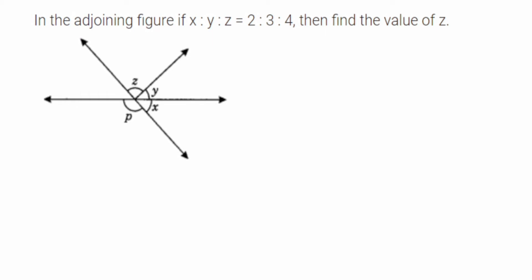How to solve this? They have given angles in the ratio 2:3:4. Whenever angles are given in a ratio, we consider a variable and write the angles as 2a, 3a, and 4a. Ratios are always given in the lowest form. For example, suppose the actual numbers are 15 and 30 — the lowest form is 1 to 2.